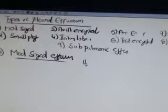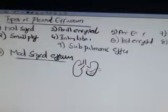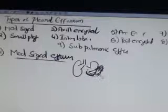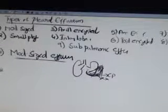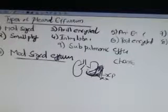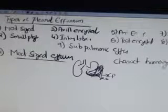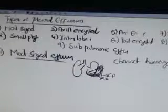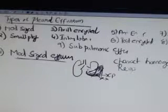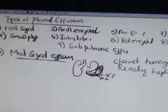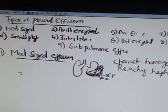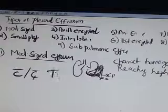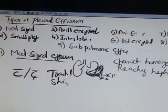As the name indicates it is of moderate size and you can see the classical fluid level here where concavity high up into the axilla with obliteration of CP angles and domes of diaphragm. Here you can see the characteristic homogenous shadow reaching high in axilla with or without tracheal shift.